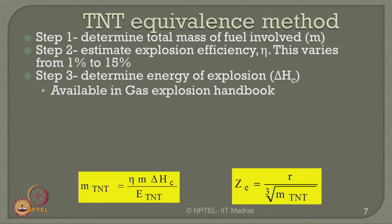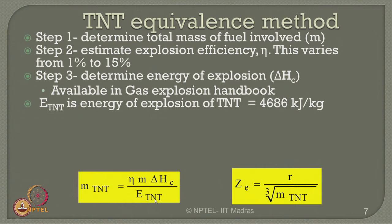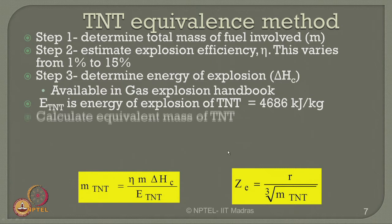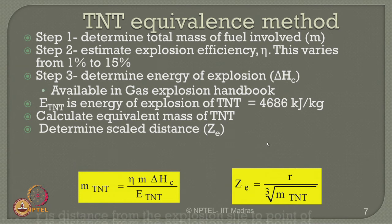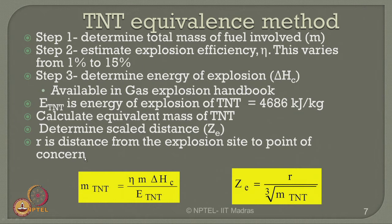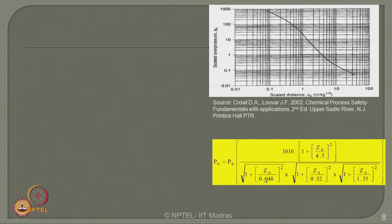We should also know E_TNT, the energy of explosion of TNT, which can be taken as 4686 kilojoules per kilogram. Once all these values are available, we get the mass equivalent of TNT participating in the explosion. Once the TNT equivalent mass is known, we substitute into the equation to get Z_d, the scaled distance, where r is the distance from the explosion site to the point of concern.